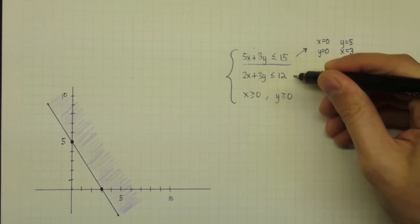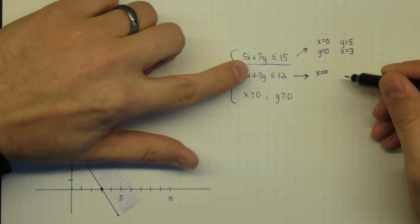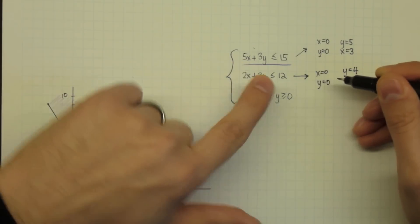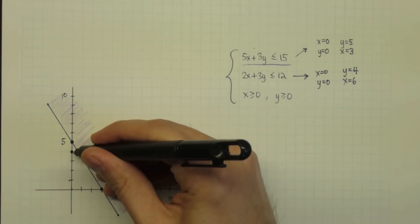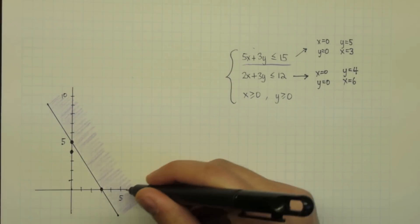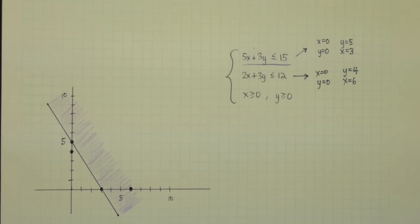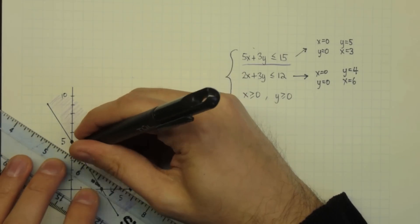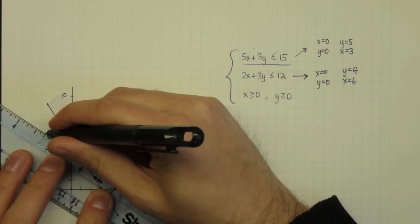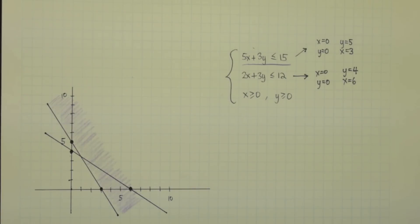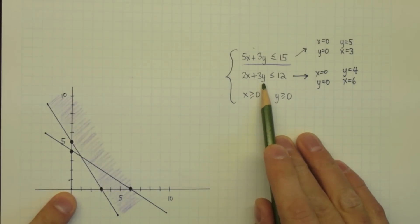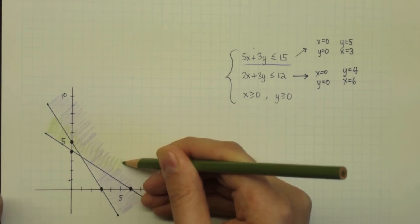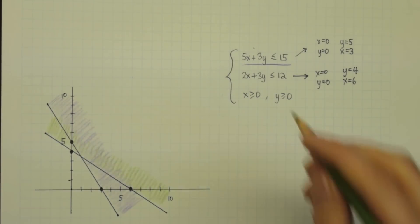We plot the second line the same way. We plot our two intercepts: (0, 4) and (6, 0). We draw the straight line between them. We then check the point (0, 0), and 0 is indeed less than or equal to 12. So the feasible set will be that side of the line, and we cross off the other side.